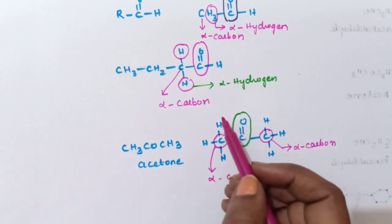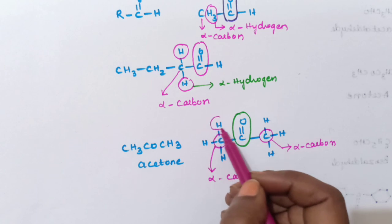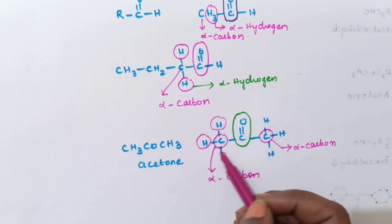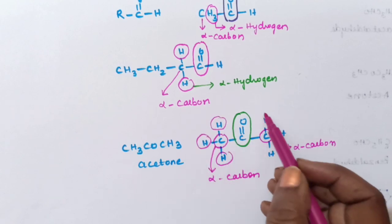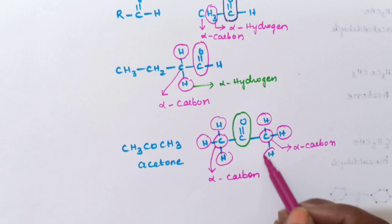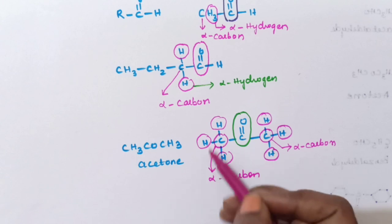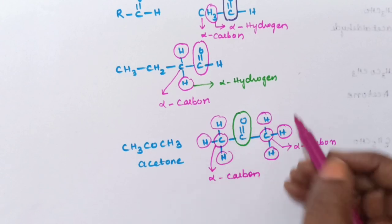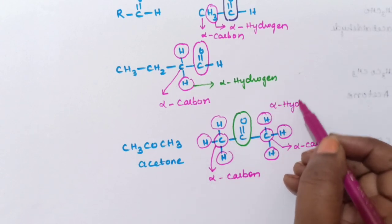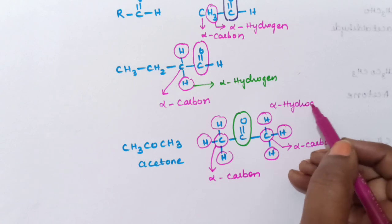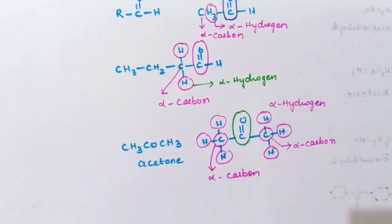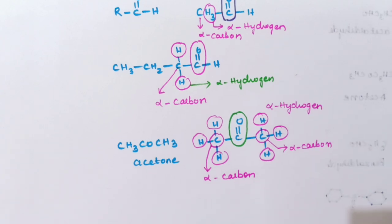Now all the hydrogen atoms attached to both alpha carbons — this hydrogen, this one, this one, this and this — all these hydrogens are called as alpha hydrogen. So is that clear? Alpha carbon and alpha hydrogen. Now let us take some more examples and try to understand.